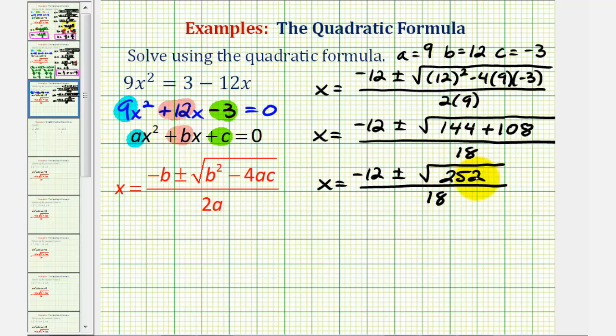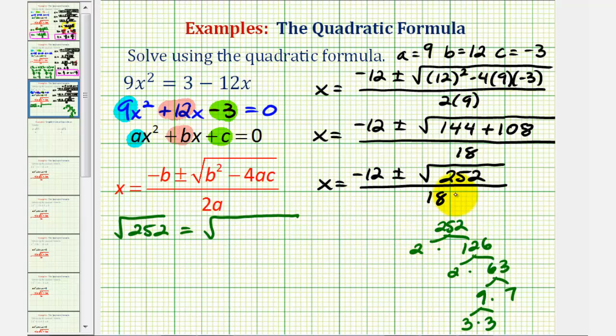To do this, we're going to find the prime factorization of 252. 252 is equal to 2 times 126, which is equal to 2 times 63, which is equal to 9 times 7, and 9 is equal to 3 times 3. So the prime factorization would be 2 times 2 times 3 times 3 times 7.